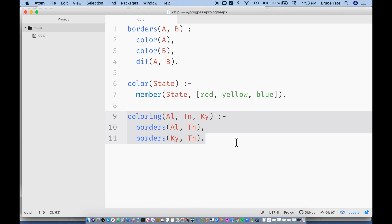We can take this coloring and it has Alabama, Tennessee, and Kentucky. And all we do is describe the map. We say that Alabama and Tennessee are bordering states and Kentucky and Tennessee are bordering states.